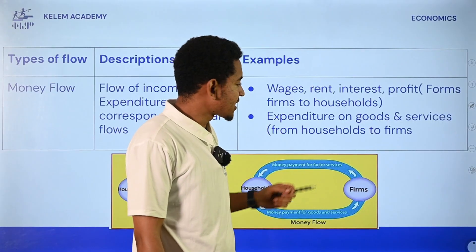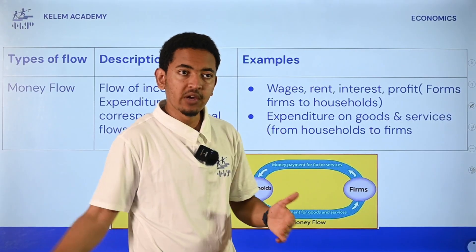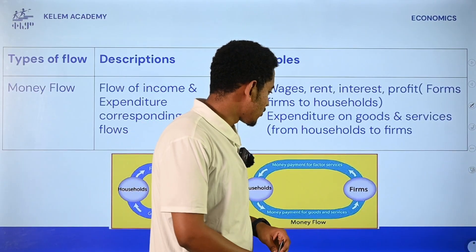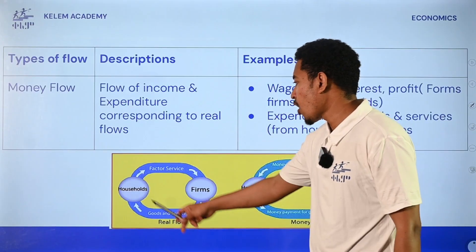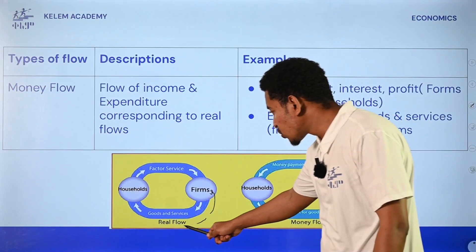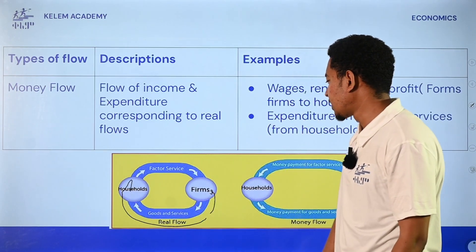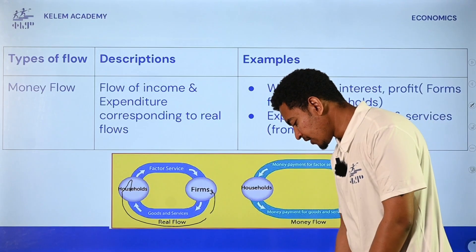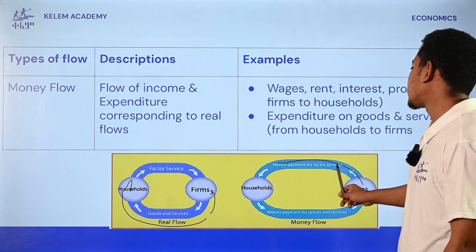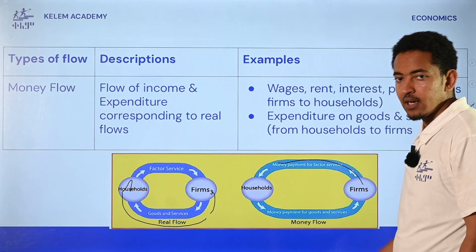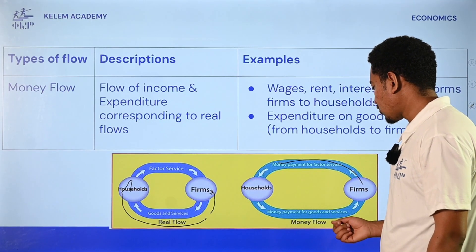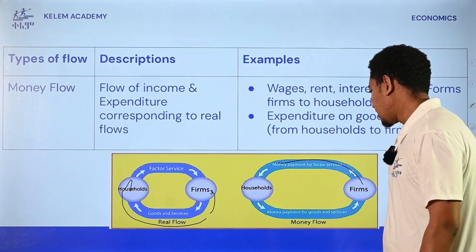Expenditure on goods and services. The land, labor, capital, entrepreneurship - work is not necessary for the business. So the diagram shows that the company has a firm.